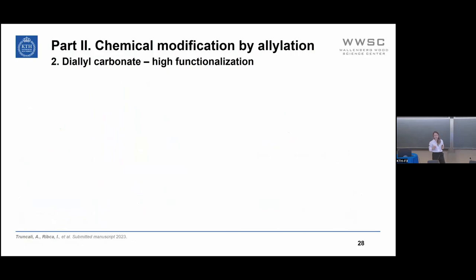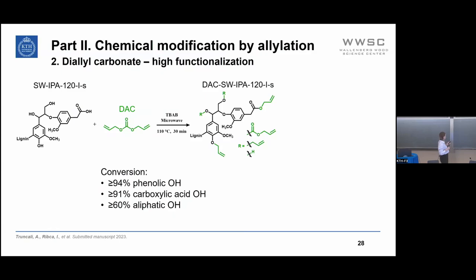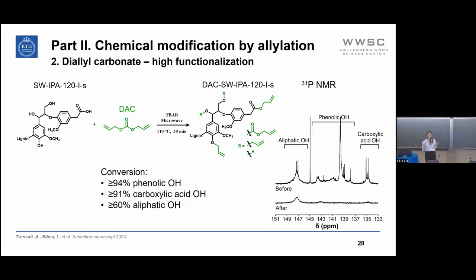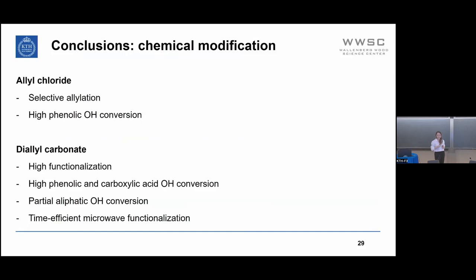The second approach used diallyl carbonate with microwave heating. Notably, the reaction was complete after only 30 minutes with the same or even slightly higher conversion of aliphatic OH. In conclusion for Part 2: allyl chloride gives selectively allylated lignin with high conversion of phenolic OH, while diallyl carbonate gives high functionalization targeting all OH groups — with near-complete conversion of phenolic and carboxylic OH and partial conversion of aliphatic OH. Using microwave functionalization makes the reaction time-efficient.